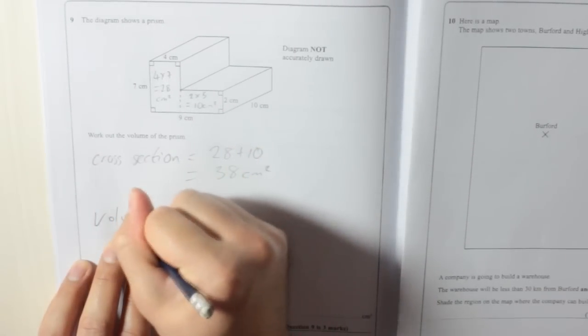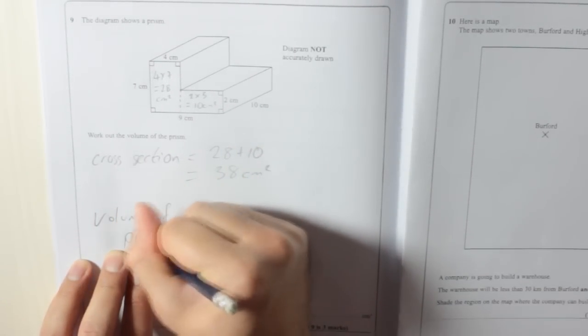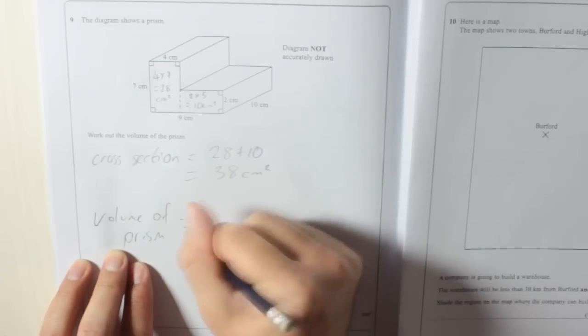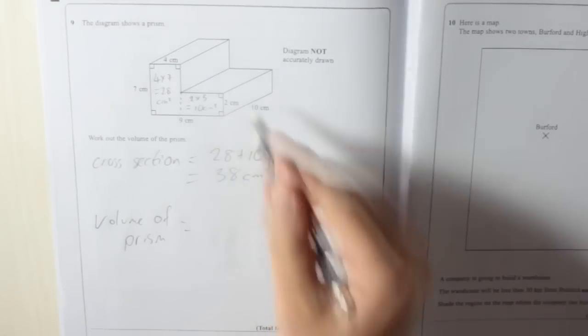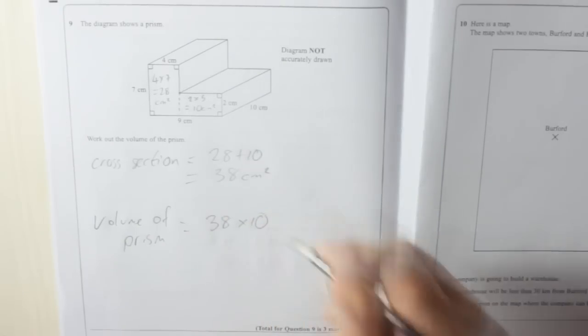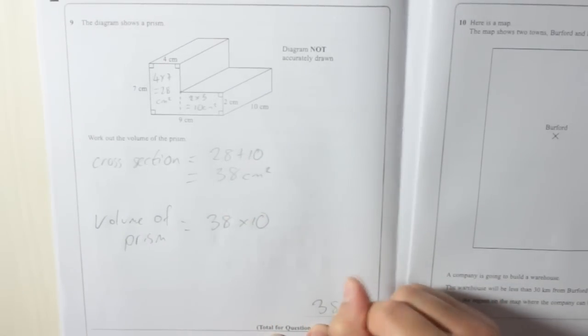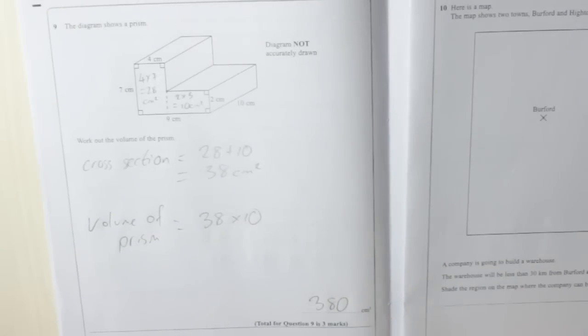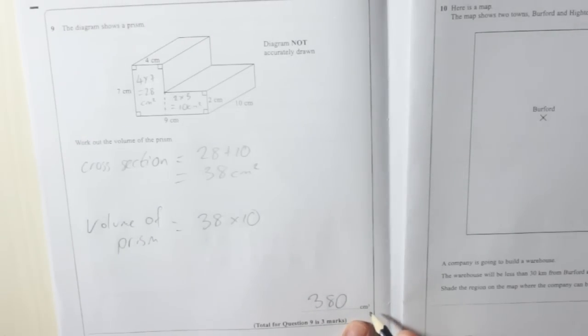So volume of prism is equal to 38, because that's our cross section, times by 10, 38 times 10 which is 380 cm³. That's the volume, it's already given, so we don't have to worry about that.